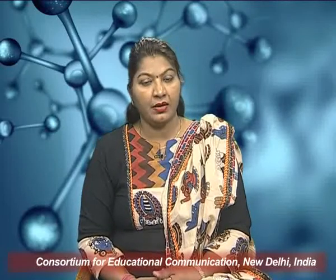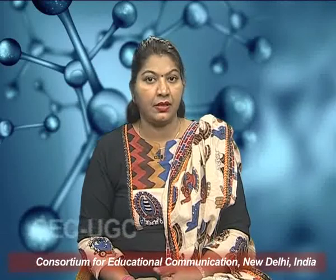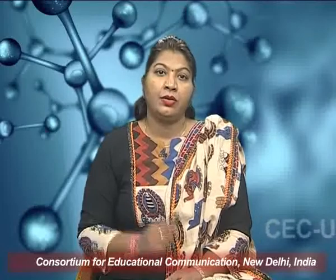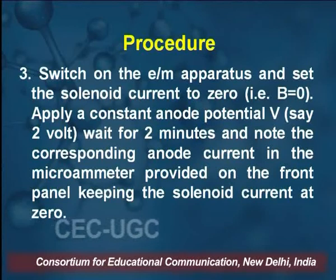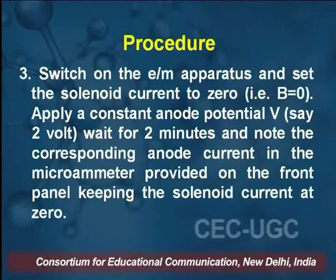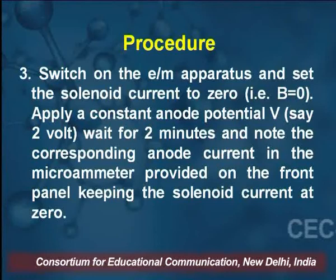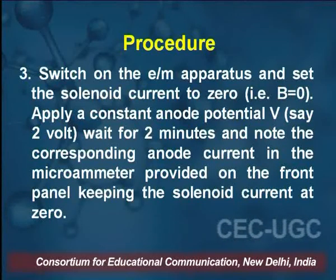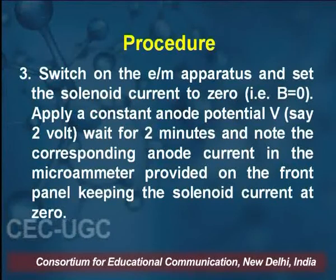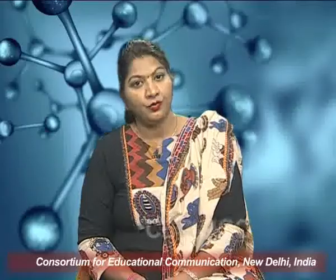We place the valve within the solenoid symmetrically along with the cable. In the third step, we switch on the E by m apparatus and set the solenoid current to zero, meaning we are not applying any magnetic field, B equal to zero. Then we apply a constant anode voltage V approximately equal to 2 volts.